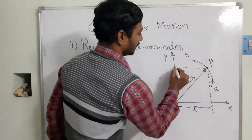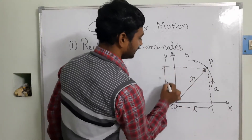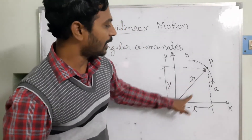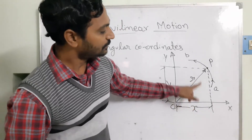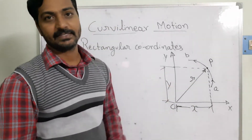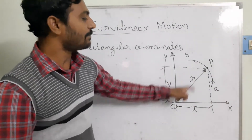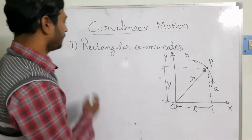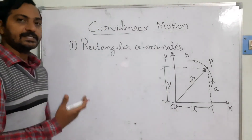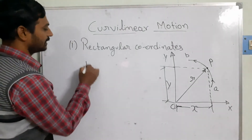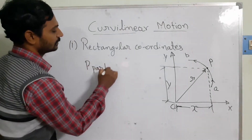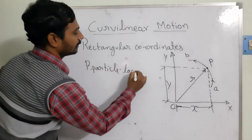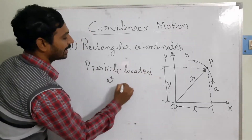Taking projections onto the y-axis, I get the y distance. The same position vector r from the origin is split into x-axis and y-axis components. So r consists of two components: x and y. In this case, x is a function of time, and the particle P is located at distance r.